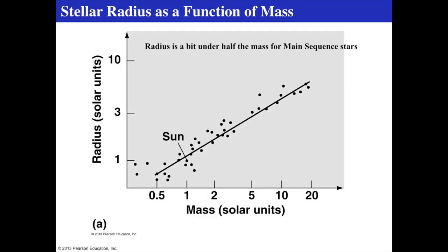Last time we talked about the radius of stars, demonstrating all the various radii from white dwarfs up to supergiant stars. But for main sequence stars specifically, the radius doesn't vary a huge amount — from about 10% the radius of the Sun for stars about half the mass of the Sun, all the way up to only about 10 times the radius of the Sun for very massive stars.